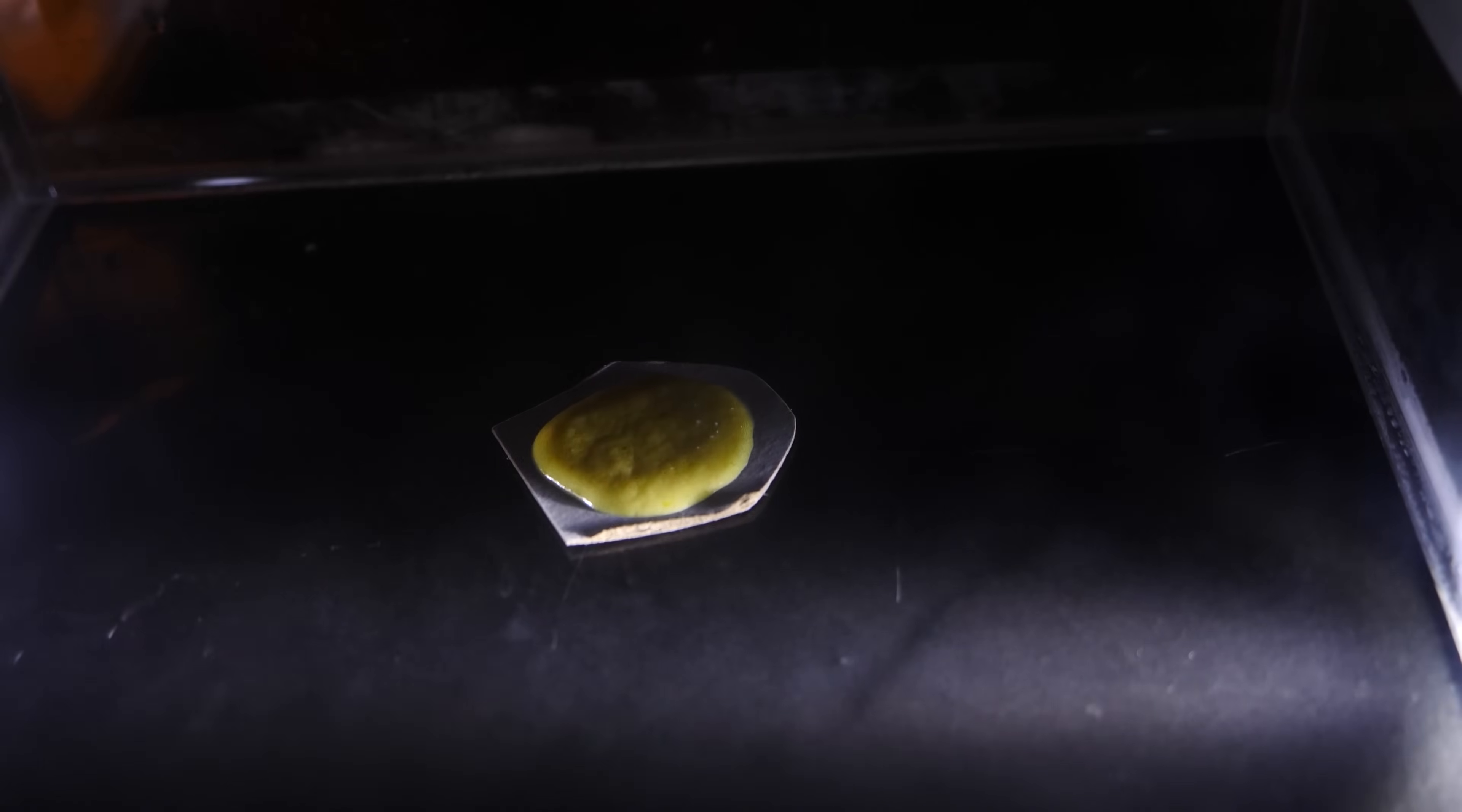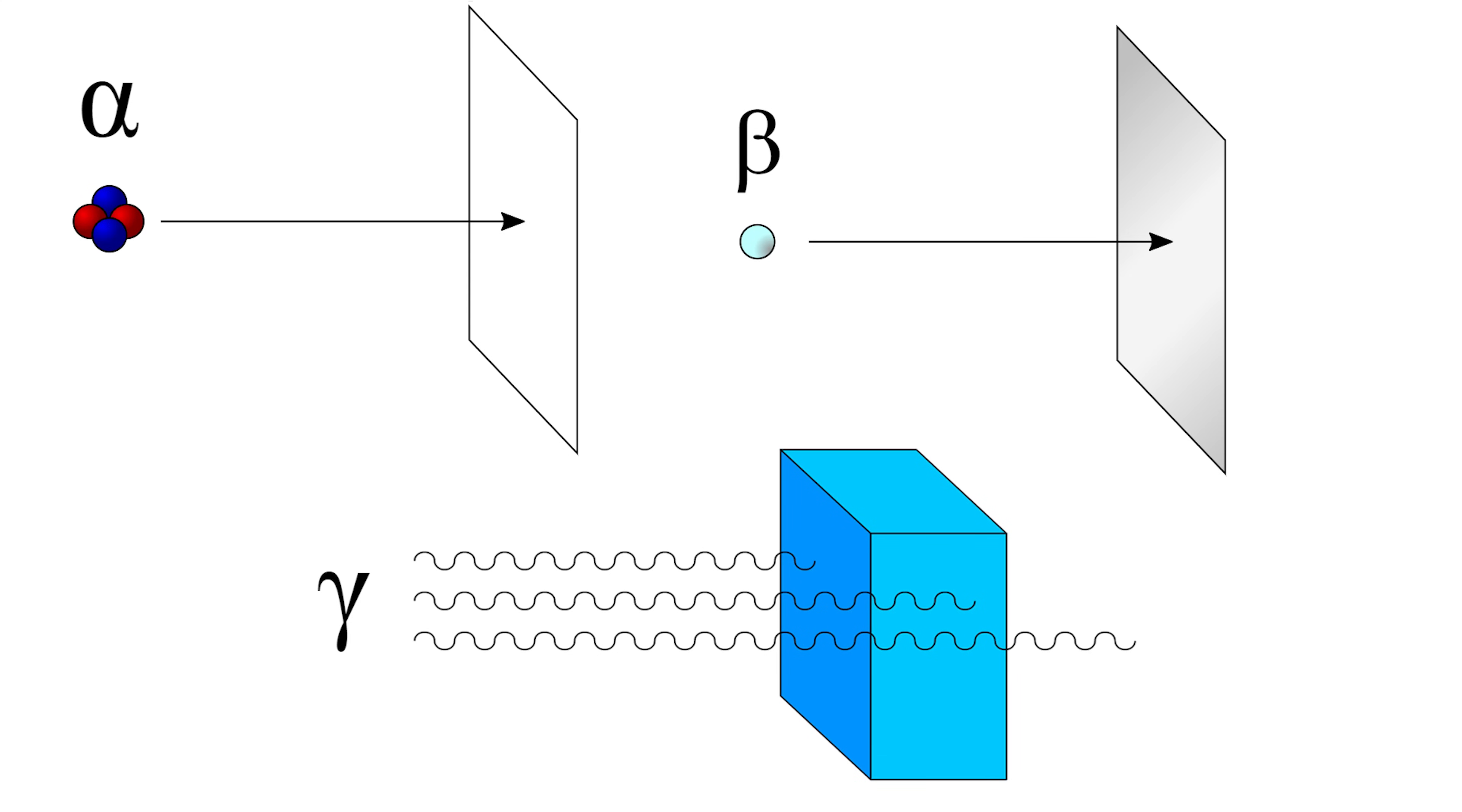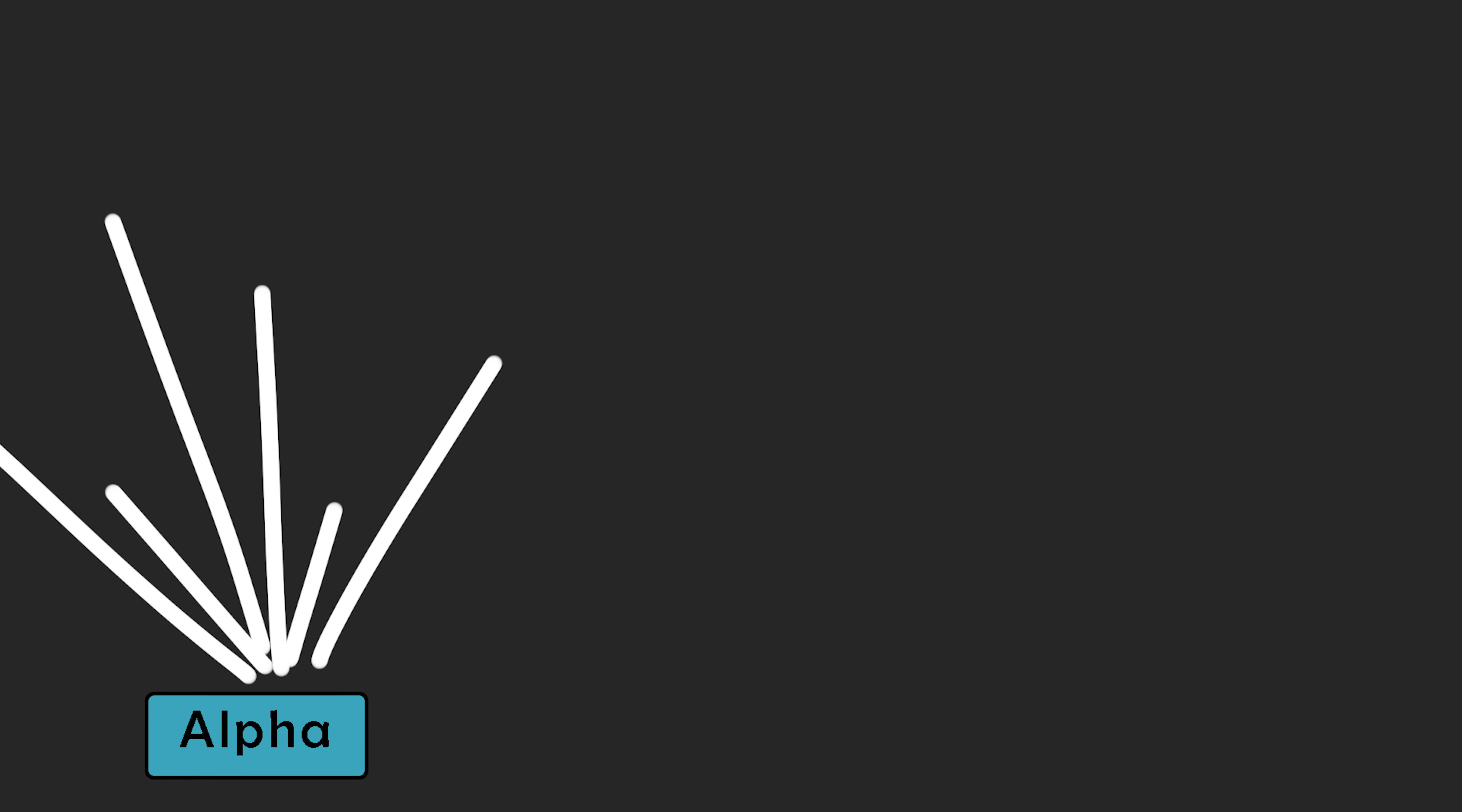Now the interesting thing about these cloud chambers is that not only can you see the path that the radiation particles took through the chamber but you can actually even tell what type of particle it is. For example the most massive radiation particle is alpha radiation. This is a helium nucleus containing two protons and two neutrons but no electrons. These particles make the large wide paths in straight lines like this. They make straight lines because they have a larger mass and they're moving very fast so they don't get knocked by the air molecules very much.